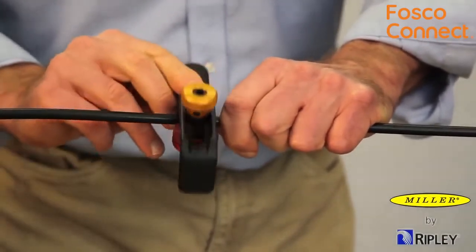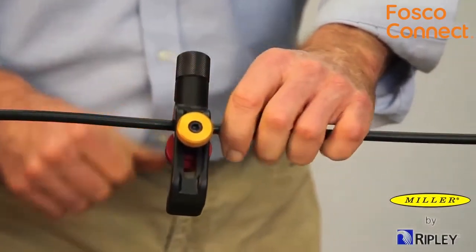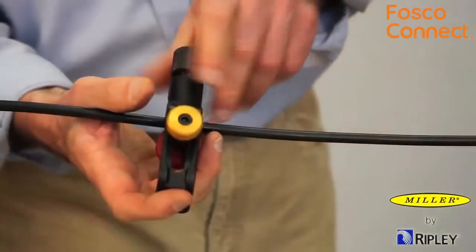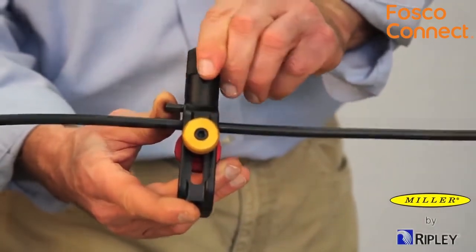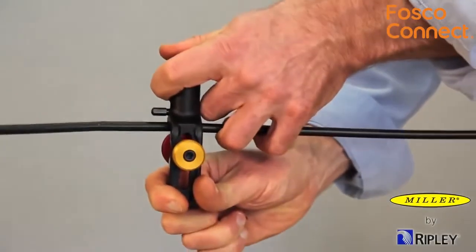Stop the tool 180 degrees from the first longitudinal cut. Index the blade assembly back to longitudinal and proceed to make the second longitudinal cut back to the start point.